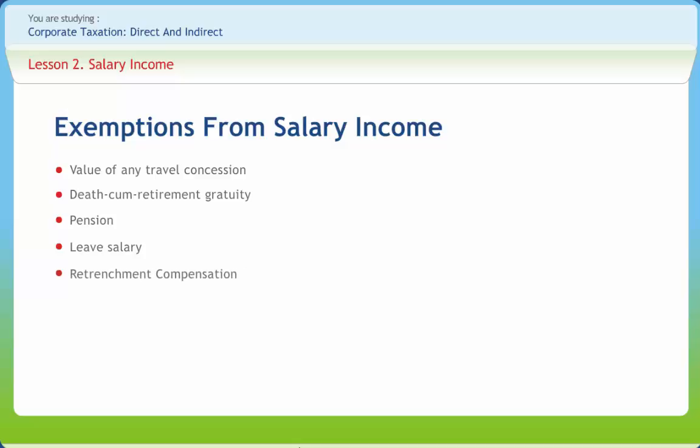Under Section 10(10C), any payment received by an employee of notified bodies at the time of voluntary retirement or termination of service in accordance with any scheme of voluntary retirement, or in the case of a public sector company a scheme of voluntary separation, is exempt to the extent that such amount does not exceed rupees 5,00,000. Any sum received under a life insurance policy, including the sum allotted by way of bonus on such policy, other than any sum received under sub-section (3) of Section 80DD(A), is also exempt. Any payment from a Provident Fund to which the Provident Funds Act, 1925 applies is exempt under Section 10(13A).